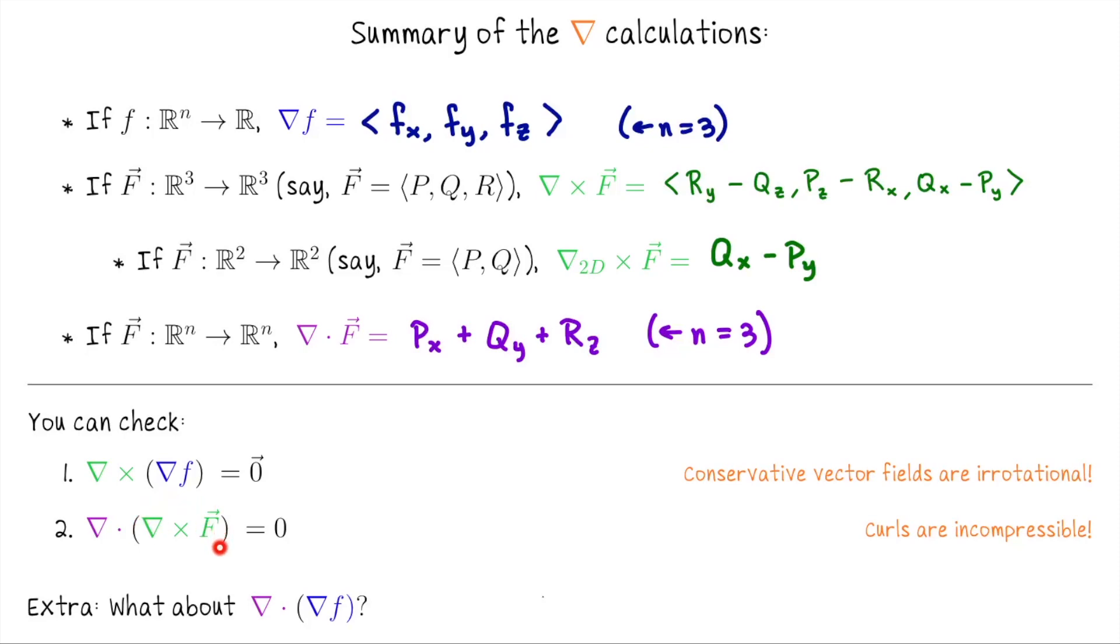If F is a vector field in R3 and we compute its curl, that's going to generate a new vector in R3. We could compute the divergence of that. But again, we're going to get zero. This time, it's a scalar zero. So the curl of any vector field is a new vector field which is incompressible. So these are like composing these operations in R3.